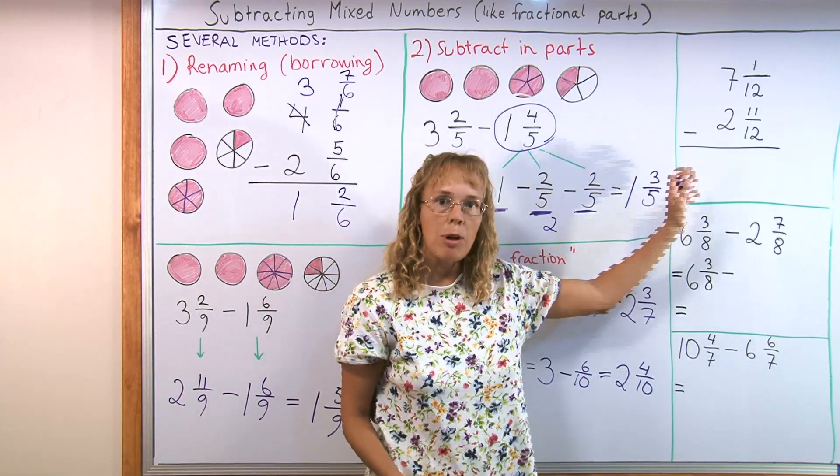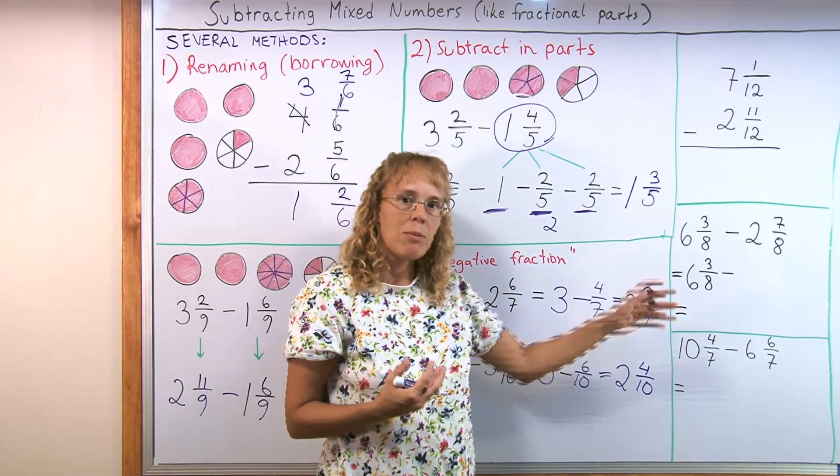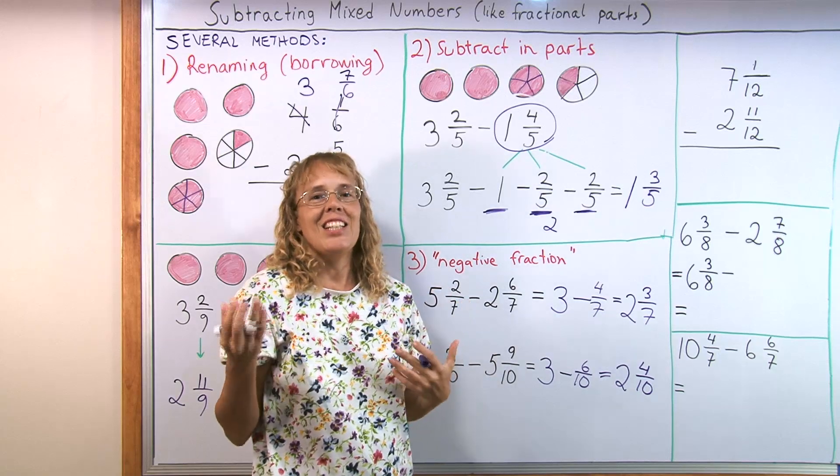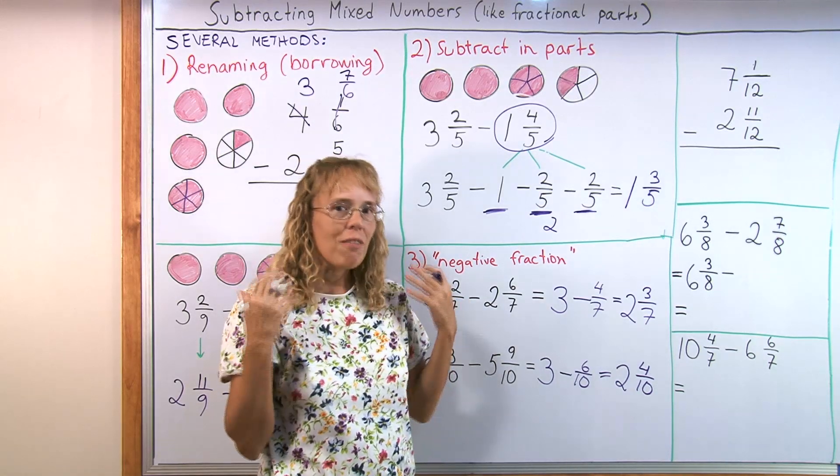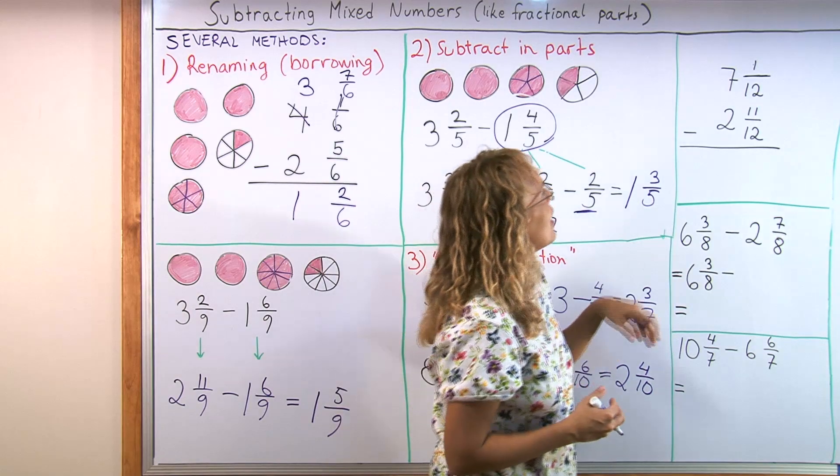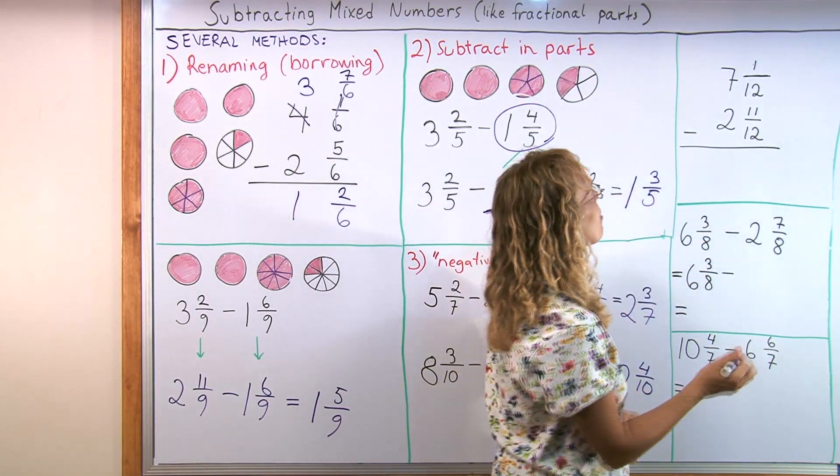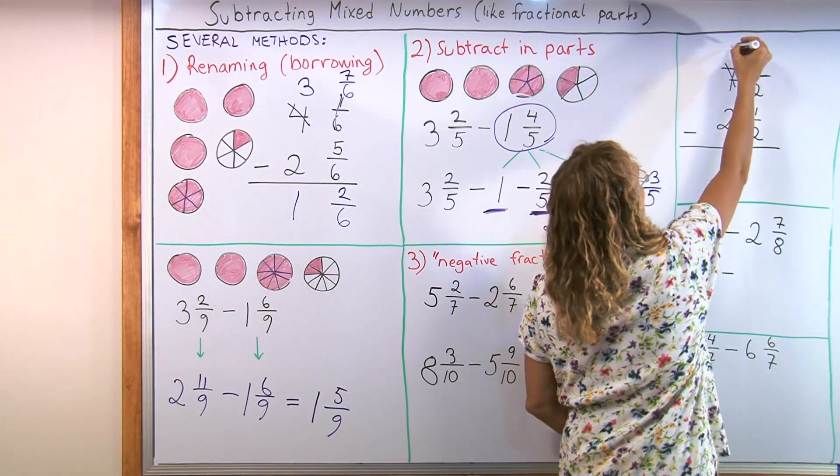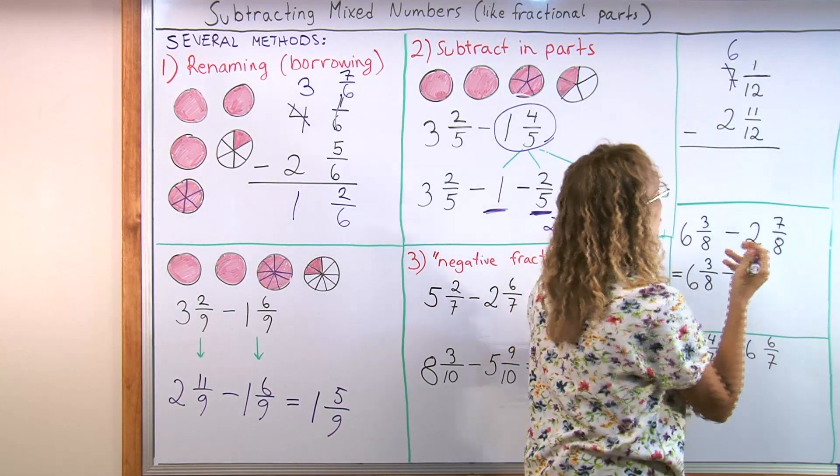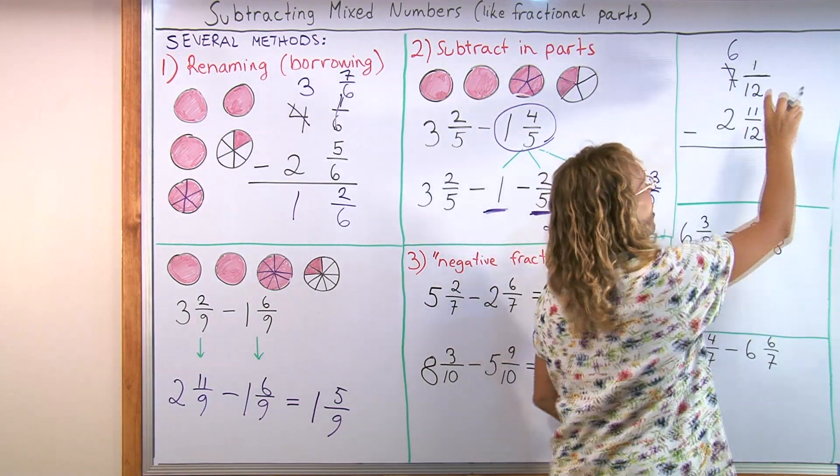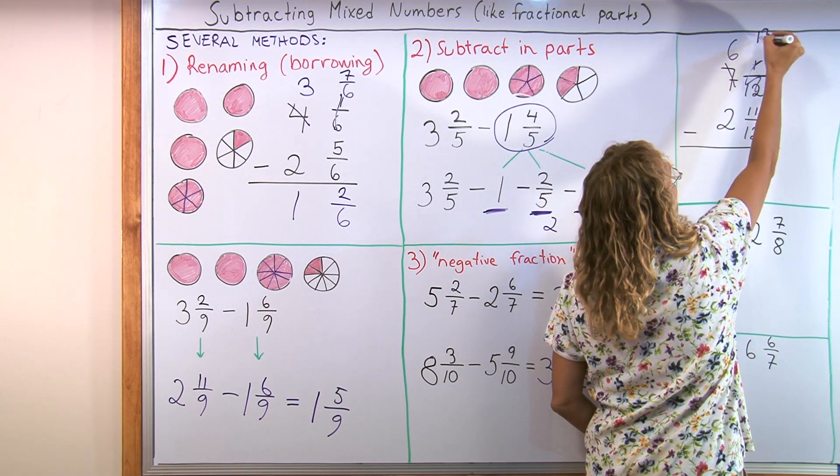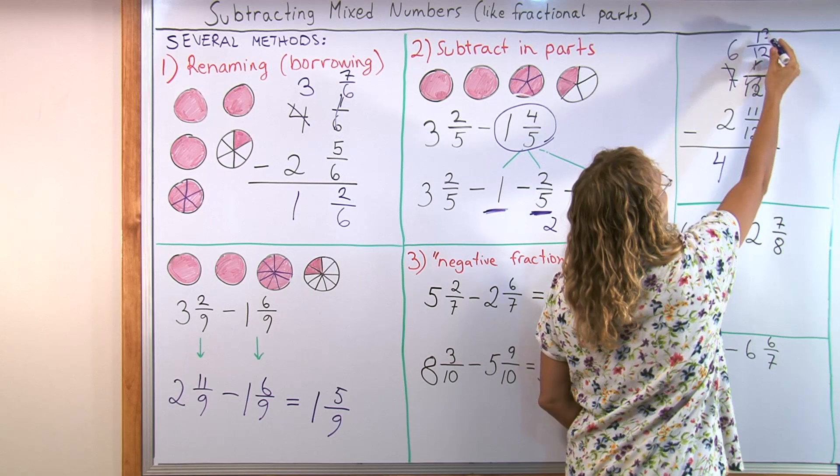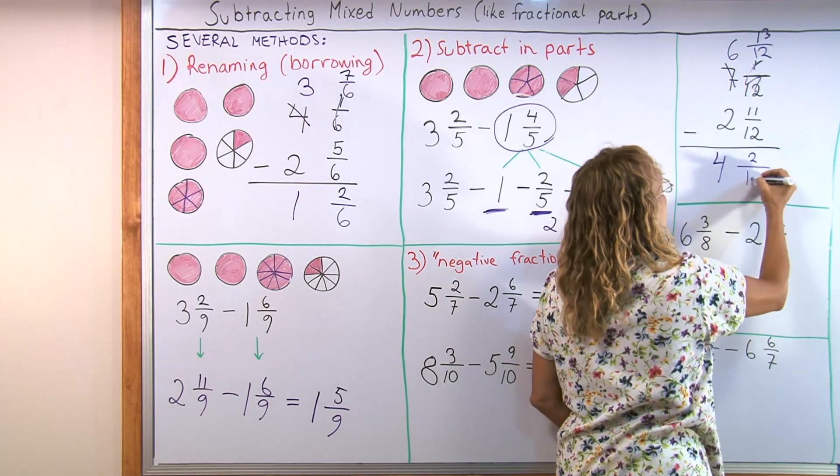Here I have then 3 more practice problems that I'm gonna solve. One problem for each method. And while I'm solving them, you can think in your mind if you can come up with the same answer. Try to solve them while I'm solving. Here we are gonna use the borrowing method. And we're gonna take 1 from this 7, 7 whole pies. So that leaves 6 whole pies. And the whole pie is gonna be 12/12. And there's 1/12 here already. So I get the total of 13/12 here. Now I can subtract easily. 6 minus 2 is 4. And then 13 minus 11 is 2. And they are twelfths.